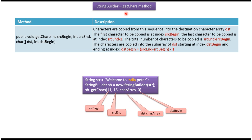In this video tutorial I will cover the getChars method of StringBuilder. Here I have declared a StringBuilder whose content is 'welcome to India Peter'. Then I am calling the getChars method of StringBuilder. I am passing source begin index 11, source end index 16, character array, and destination begin index 0. This method will copy the substring 'India' to the character array.